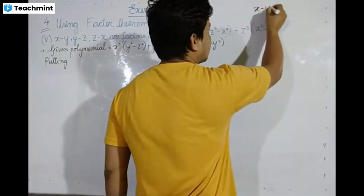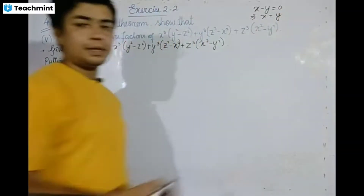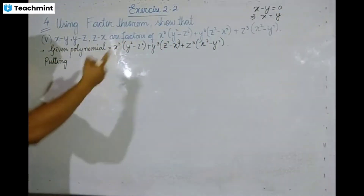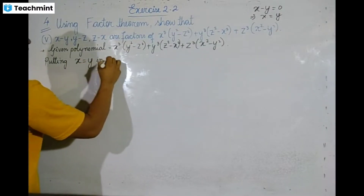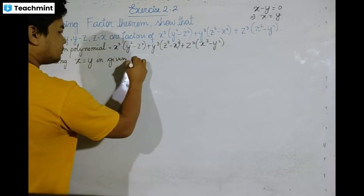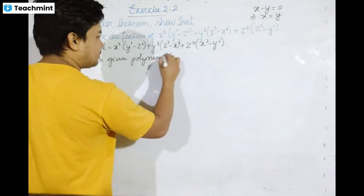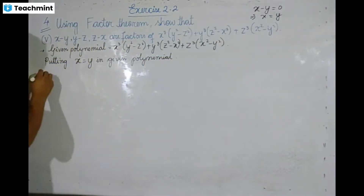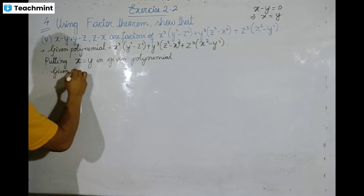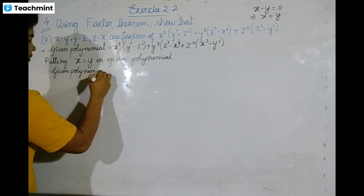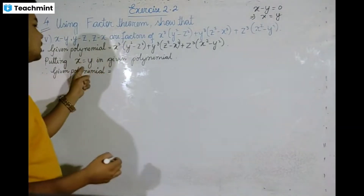X minus y equals zero means x equals y. Putting x equal to y in the given polynomial to check if (x minus y) is a factor.